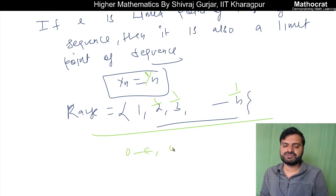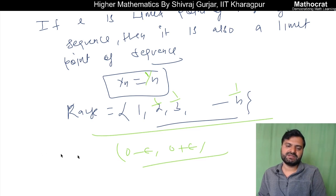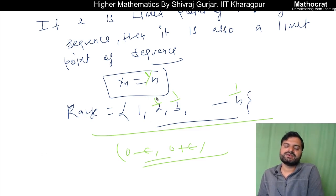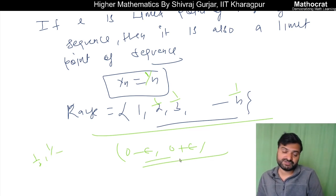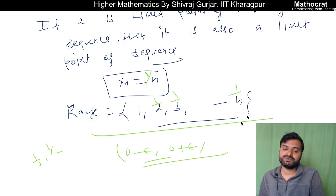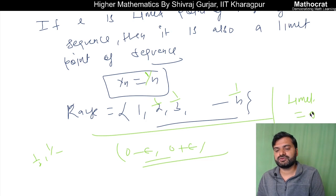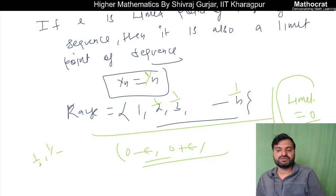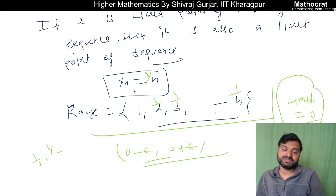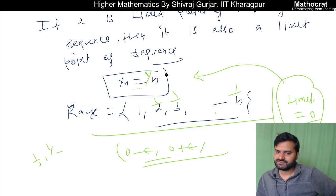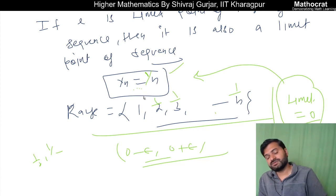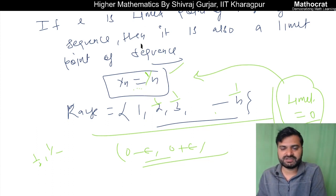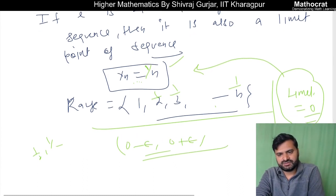So 0 is a limit point of the range, and 0 is also the only limit point. In fact, the limit point of the sequence 1/n is 0. And the limit of the sequence is also 0. So the limit and limit point coincide here. But note that the reverse is not always true — having a limit point does not necessarily mean it is the limit of the sequence. I hope this is clear. These were some easy examples covering the concept of limit points of sequences.